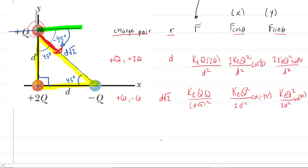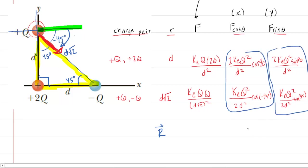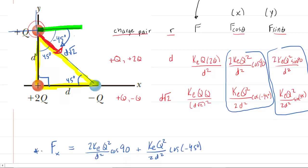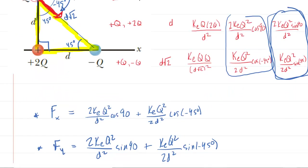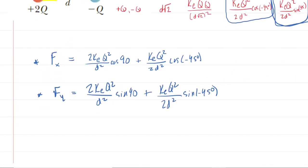Now we need the resultant electrostatic force. To get the resultant, we add the X components together and also add the Y components together. For the X direction: cosine of 90 degrees equals zero, so that entire first term multiplied by zero goes to zero, leaving us with just the expression from the second force pair for the X direction.